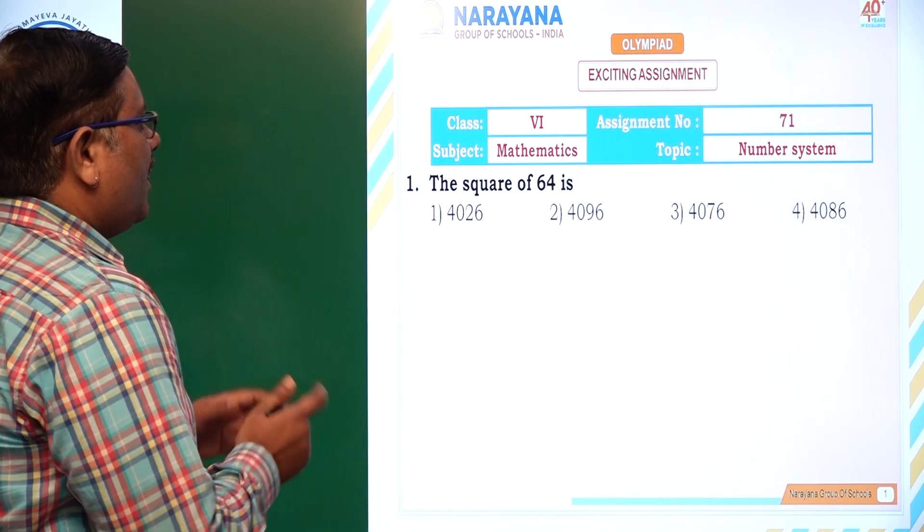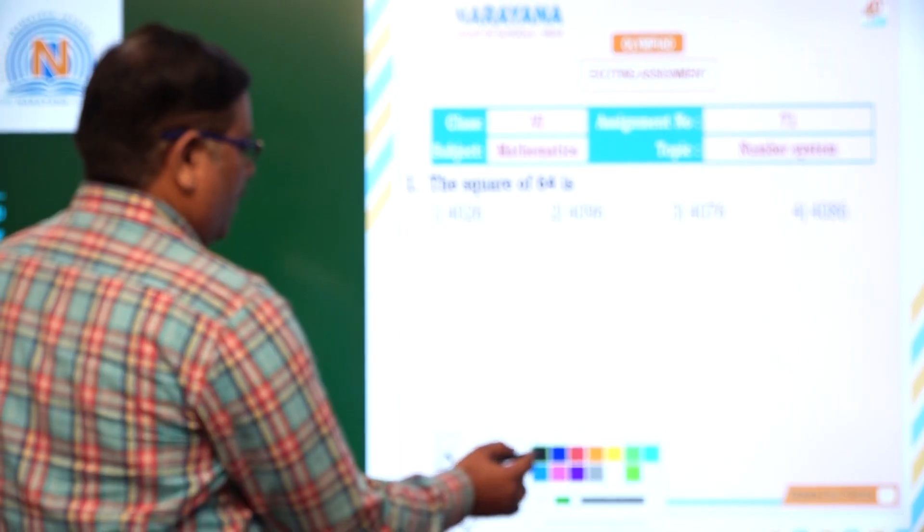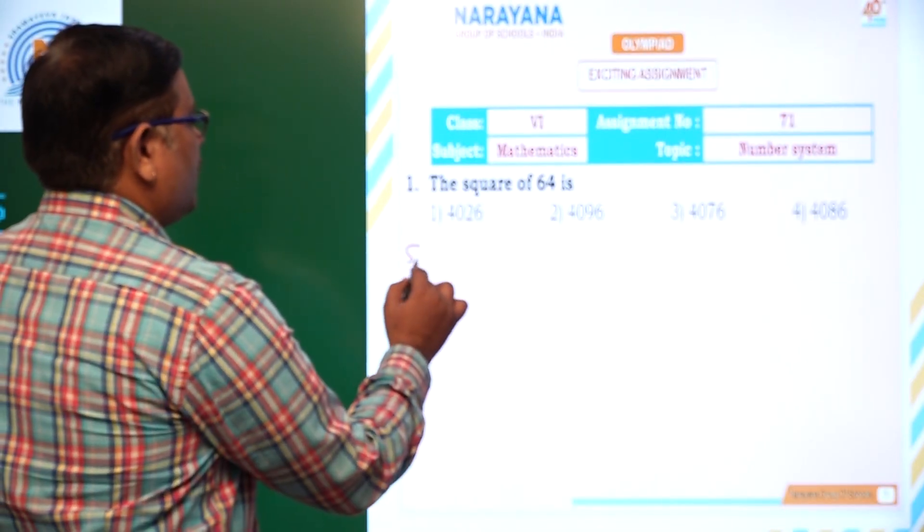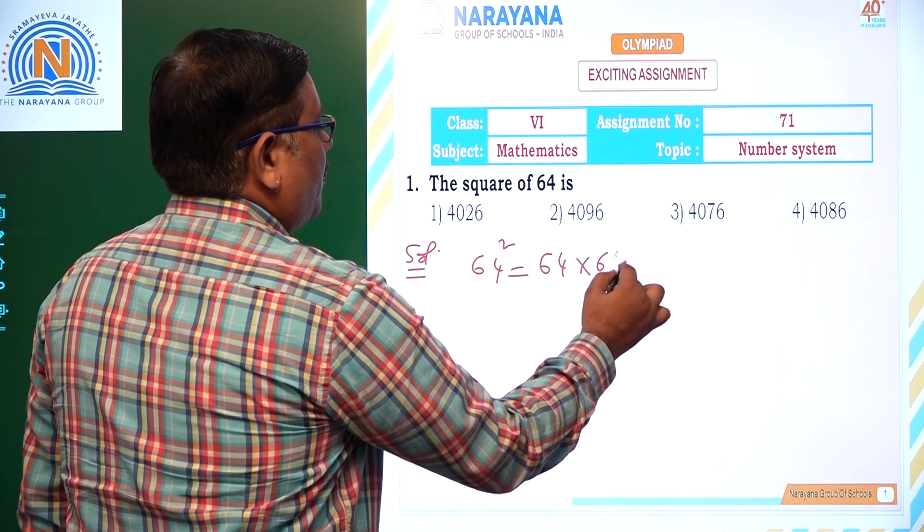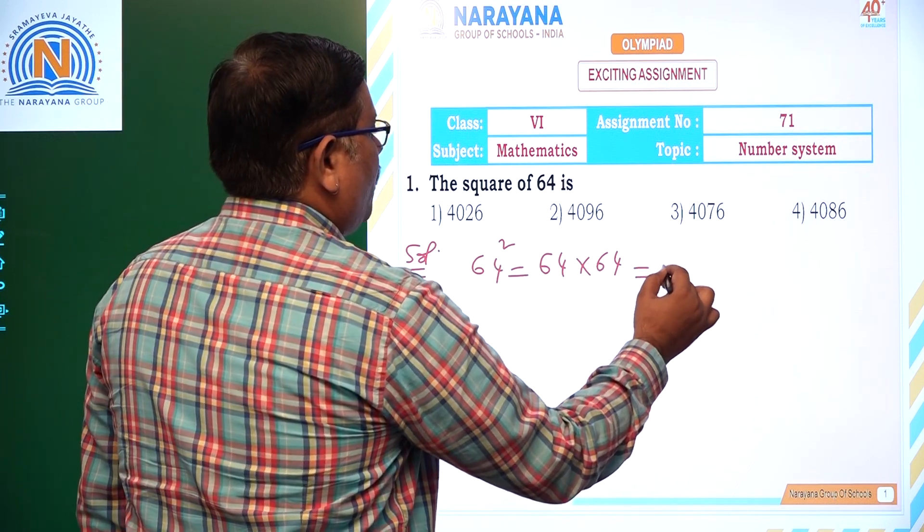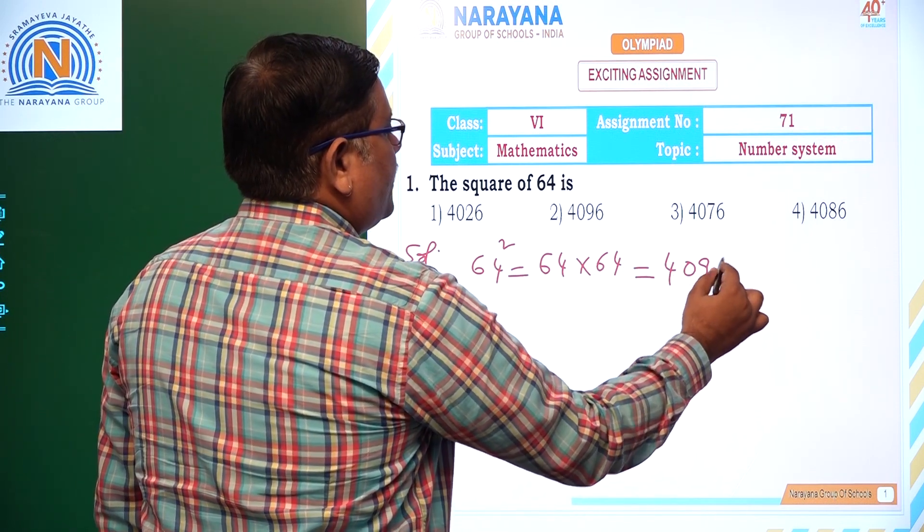Let us start with the first question. The square of 64 is square of 64, which means 64 squared, that is 64 into 64. When I multiply, that is going to be 4096 for us.